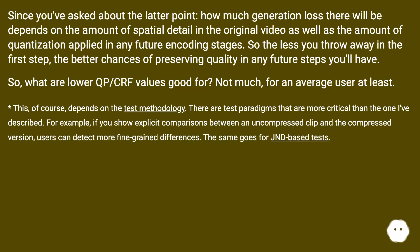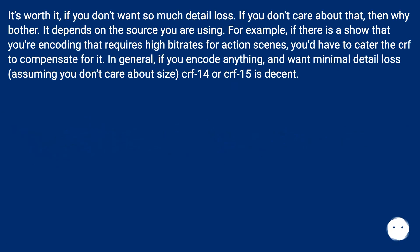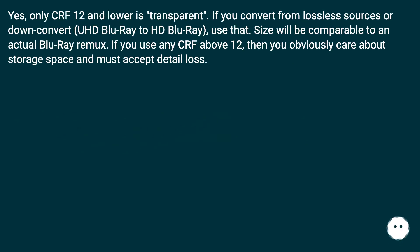For example, if you show explicit comparisons between an uncompressed clip and a compressed version, users can detect more fine-grained differences. The same goes for JND-based tests. It's worth it if you don't want so much detail loss; if you don't care about that, then why bother? It also depends on the source — for example, if there is a show requiring high bit rates for action scenes, you'd have to cater the CRF to compensate. In general, if you want minimal detail loss and don't care about size, CRF 14 or CRF 15 is decent. Only CRF 12 and lower is considered transparent. If you convert from lossless sources or downconvert UHD Blu-ray to HD Blu-ray, use that — size will be comparable to an actual Blu-ray remux. If you use any CRF above 12, you obviously care about storage space and must accept some detail loss.